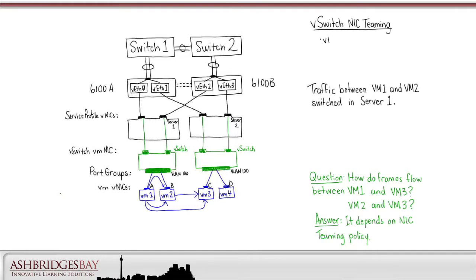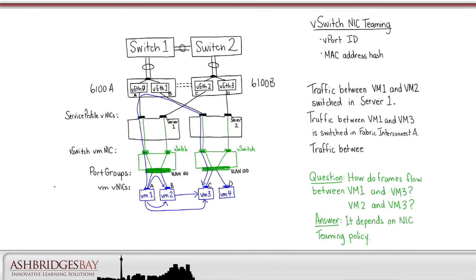Let's look at vport ID or MAC address hash NIC teaming. For both of these, our VM VNICs end up being pinned to particular service profile VNICs. Traffic between VM1 and VM3 will be switched on Fabric Interconnect A. Traffic between VM2 and VM3 will be switched upstream.